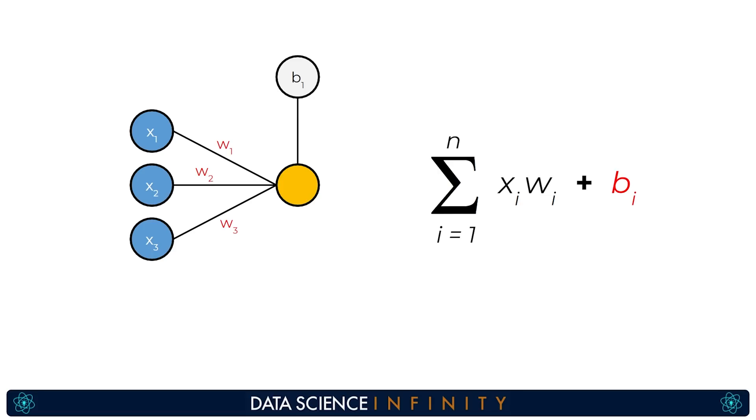Now that is all quite theoretical so let's run through this as an example with actual numbers. Let's say our inputs x1 x2 and x3 actually held values of 1, 3 and 3 which you can see in the blue input neurons. Let's also say that our weight values were 4, 1 and negative 2 and let's say our bias value was 7.